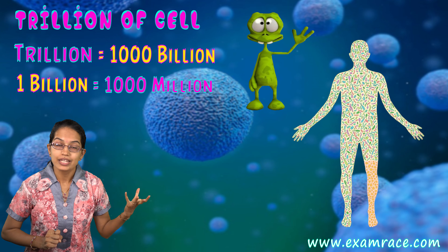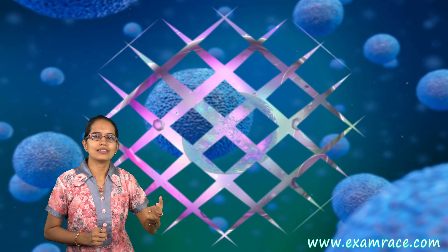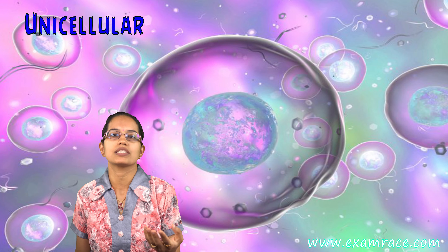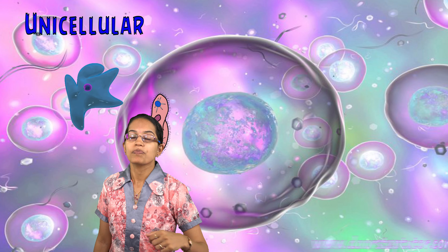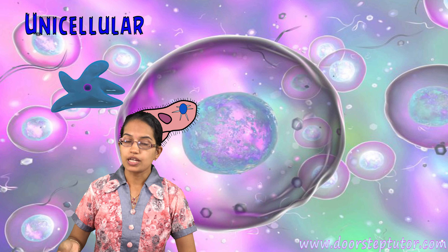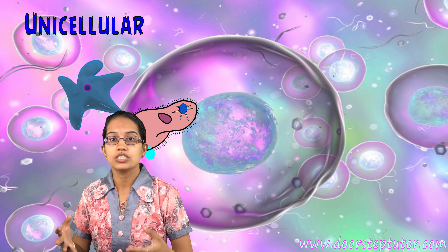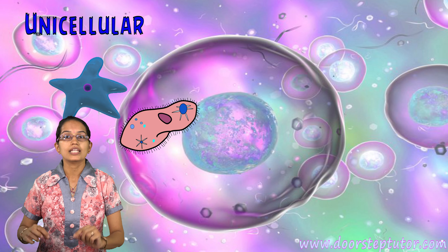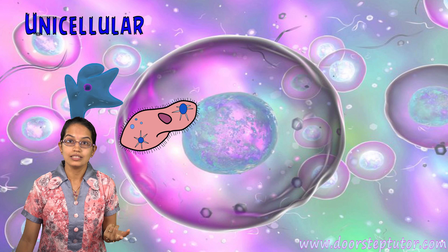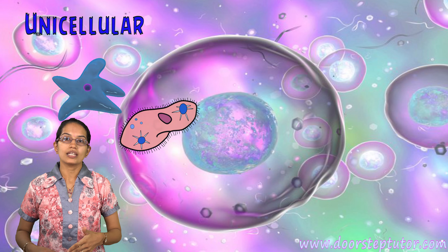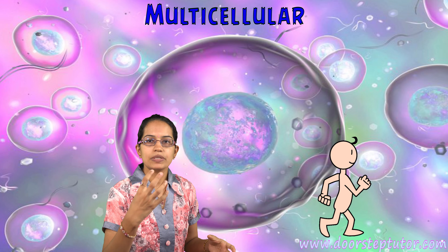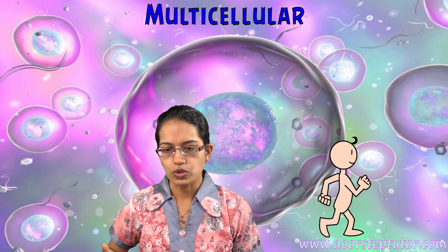There are various kinds of organisms. Some organisms are unicellular, that means they have a single cell. For example, amoeba and paramecium — all the functions of reproduction, excretion, digestion, and respiration are taken care of by a single cell. On the other hand, we have multicellular organisms where specialized cells perform specialized work.